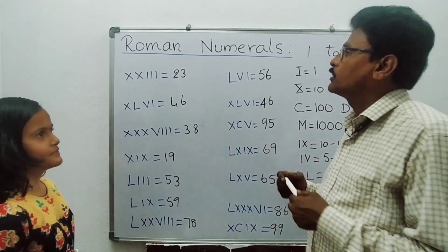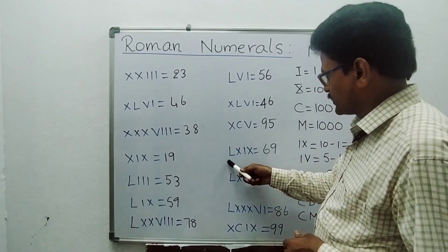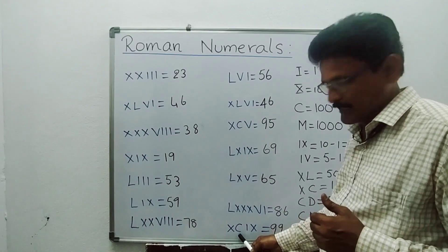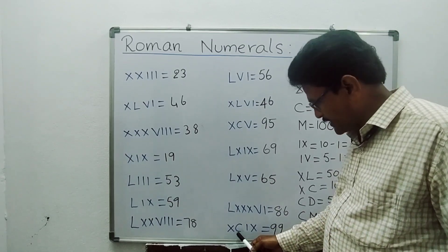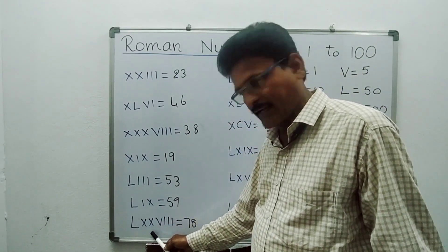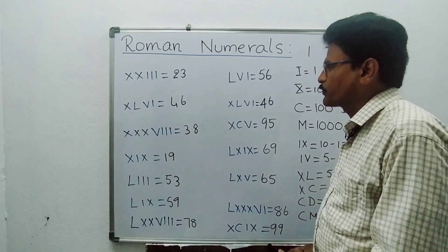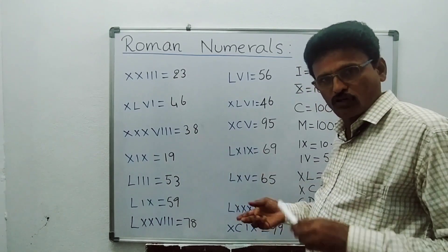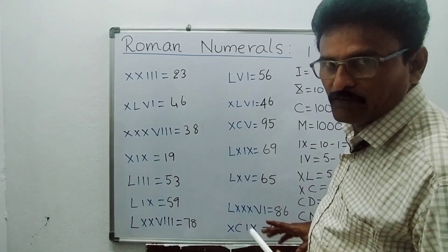Observe: if the bigger one is L on the left, you add the right side. If C is the bigger one and X is on the left side, you subtract first — 100 minus 10 = 90 — then add the right side. For example, LXIX: bigger one is L, right side has XX so 50+20=70, then add 8 for 78. XCV: C is bigger, X is on the left so 100−10=90, then add 5 = 95. XCIX = 90+9 = 99.